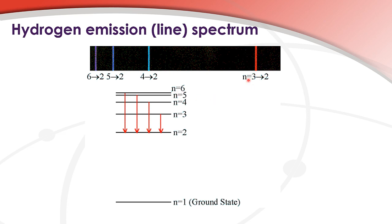This red line corresponds to the energy emitted when the electron moves from the n equals 3 energy level down to the n equals 2 energy level. The next coloured line corresponds to the energy emitted when the electron moves from n equals 4 down to the n equals 2 energy level. The next coloured line corresponds to the energy emitted when the electron moves from n equals 5 down to the n equals 2 energy level. And the final coloured line corresponds to the energy emitted when the electron moves from n equals 6 down to the n equals 2 energy level.